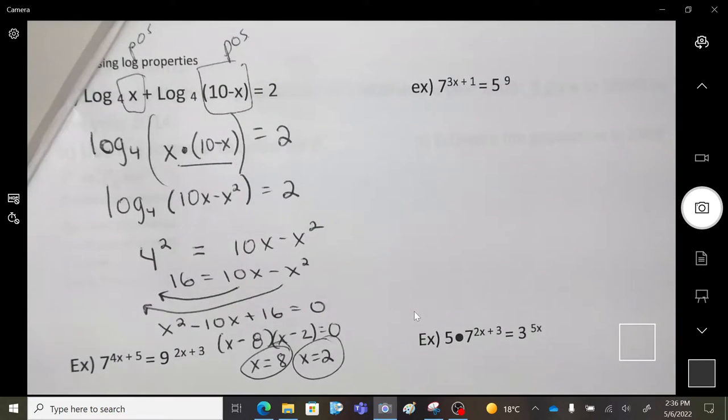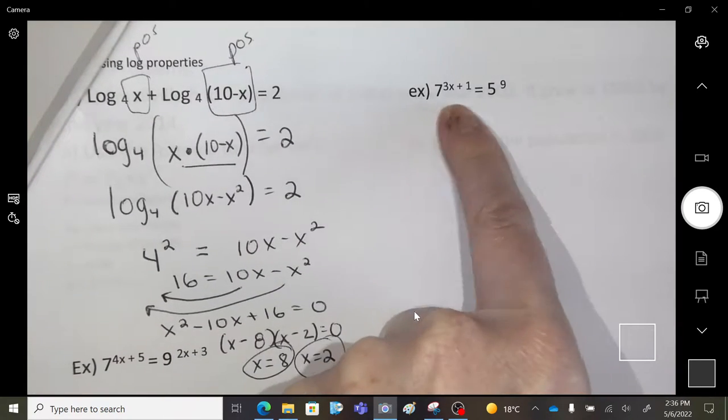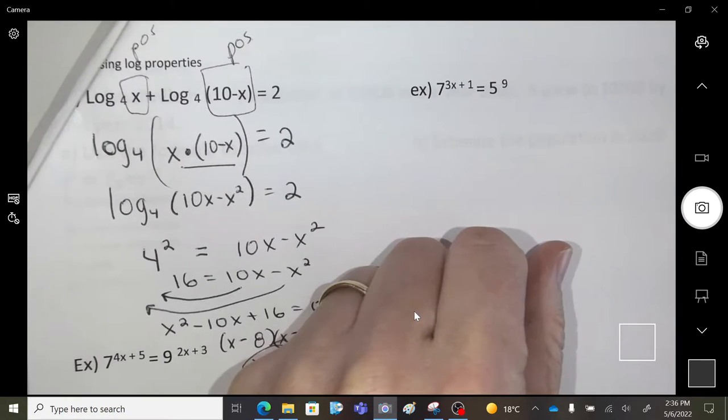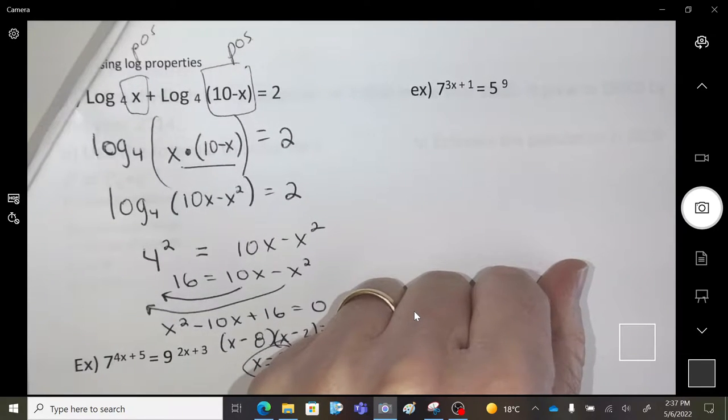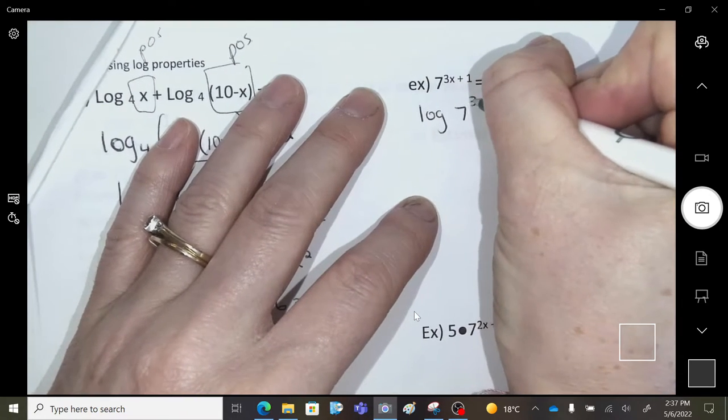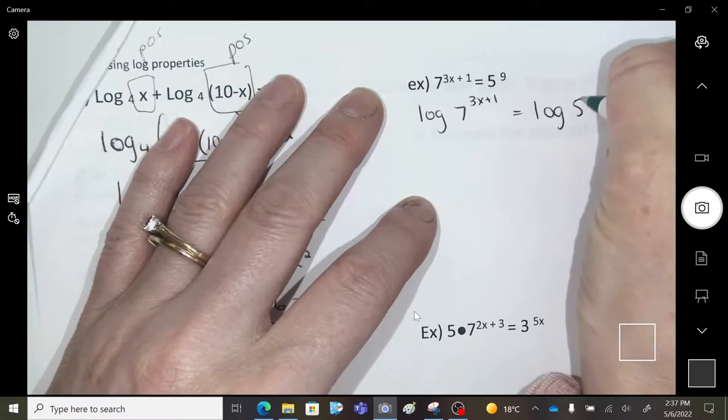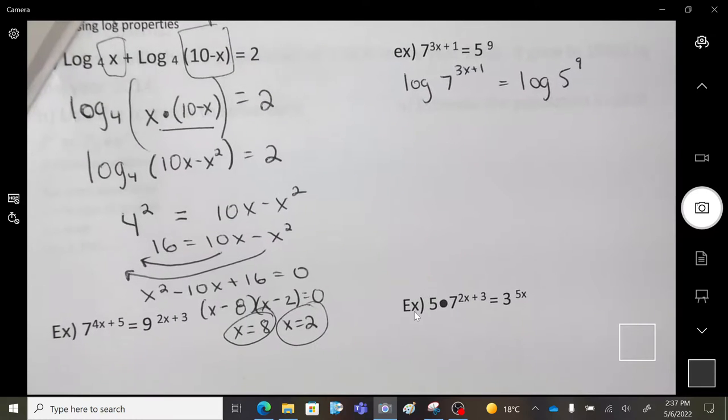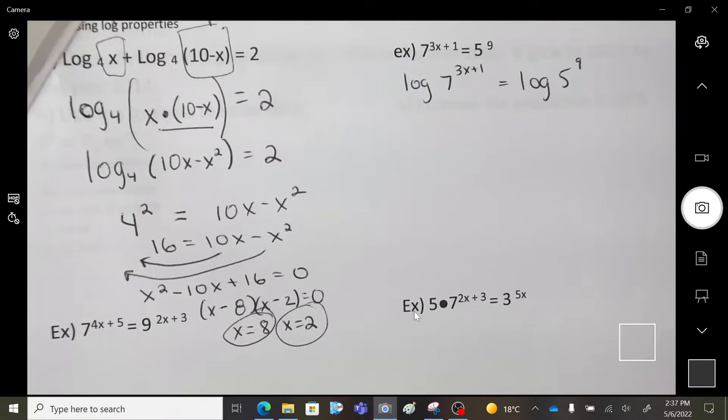Next. We cannot solve this using the same base. Does that make sense? I can't write a seven and a five using the same base. We've already done that method. So the only way to ever solve for a variable when it's in an exponent position is to log both sides. And we always do this in math, right? When we do something to one side, we do it to the other. So all I've done is said, to solve this, I'm going to log both sides. That's all I've done.